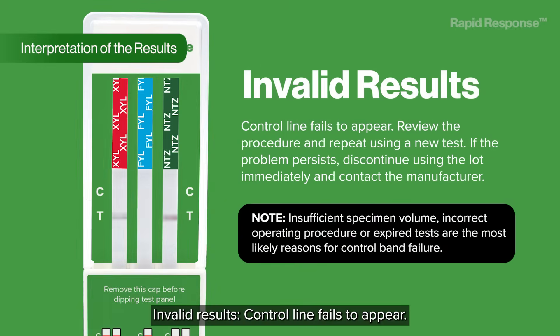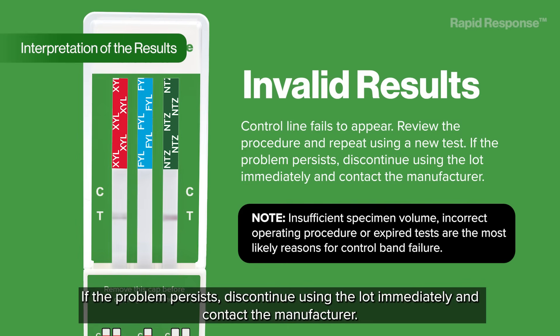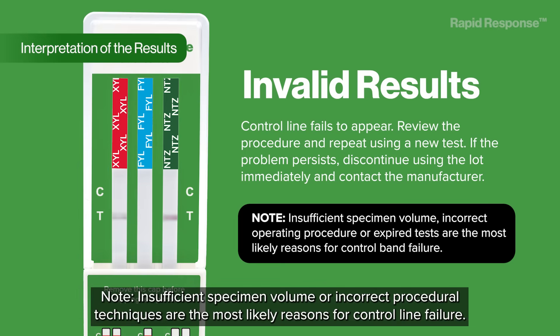Invalid results: the control line fails to appear. Review the procedure and repeat using a new test. If the problem persists, discontinue using the lot immediately and contact the manufacturer. Note: insufficient specimen volume or incorrect procedural techniques are the most likely reasons for control line failure.